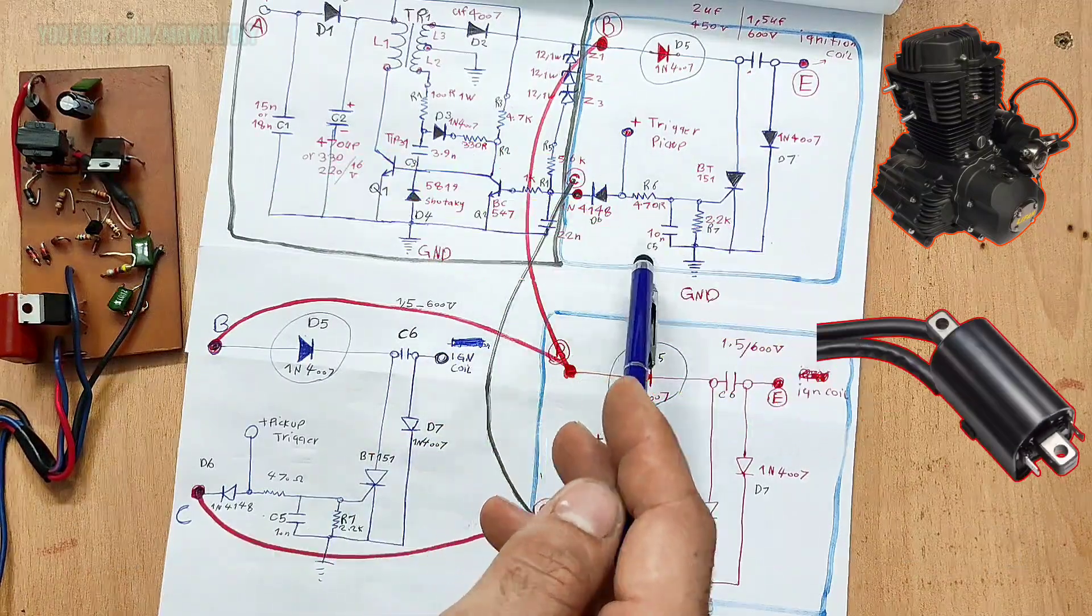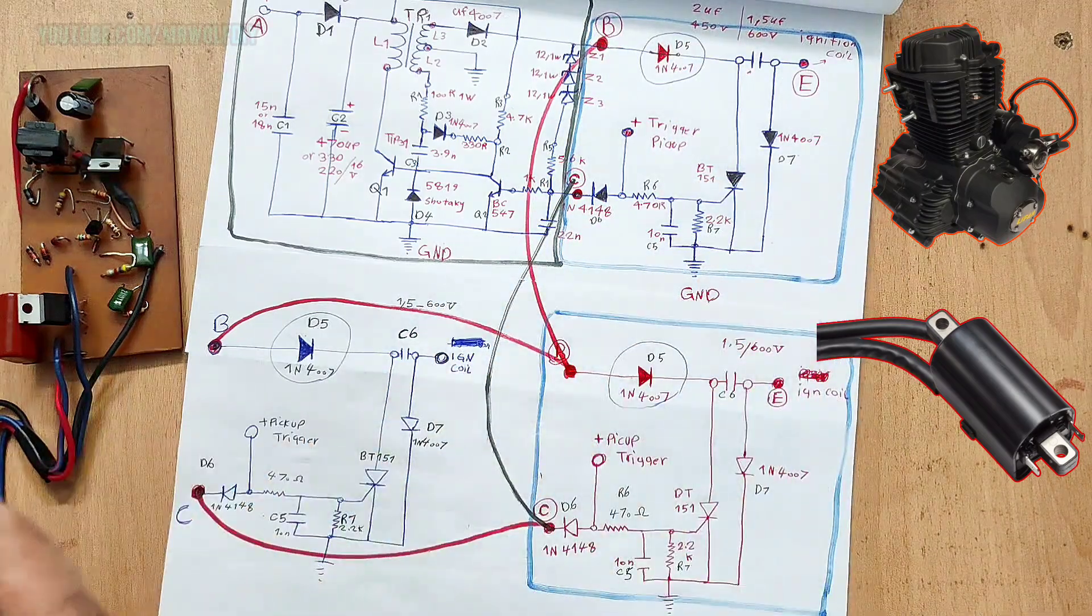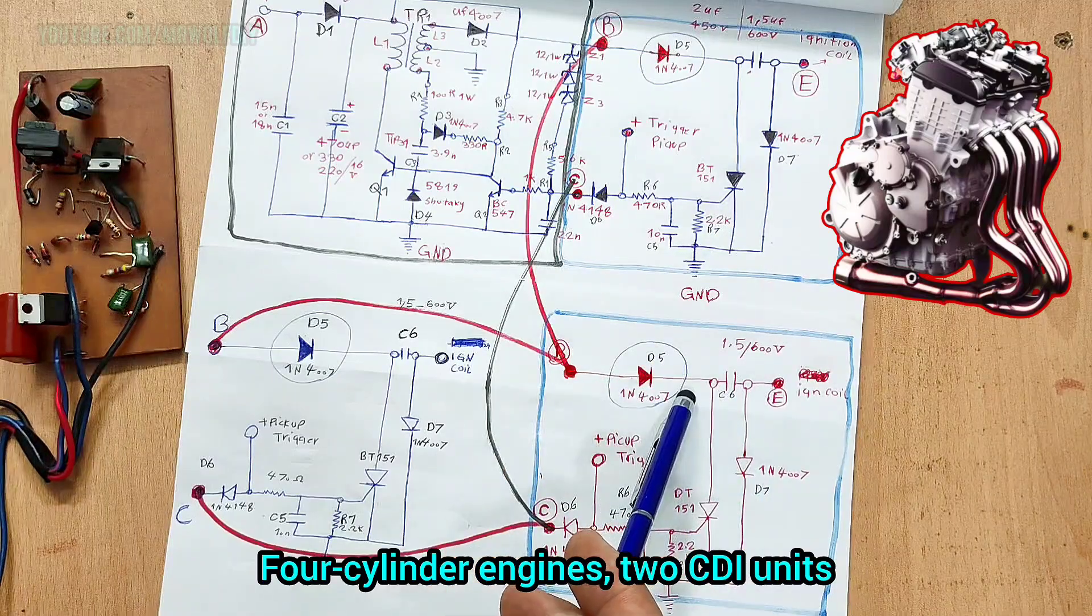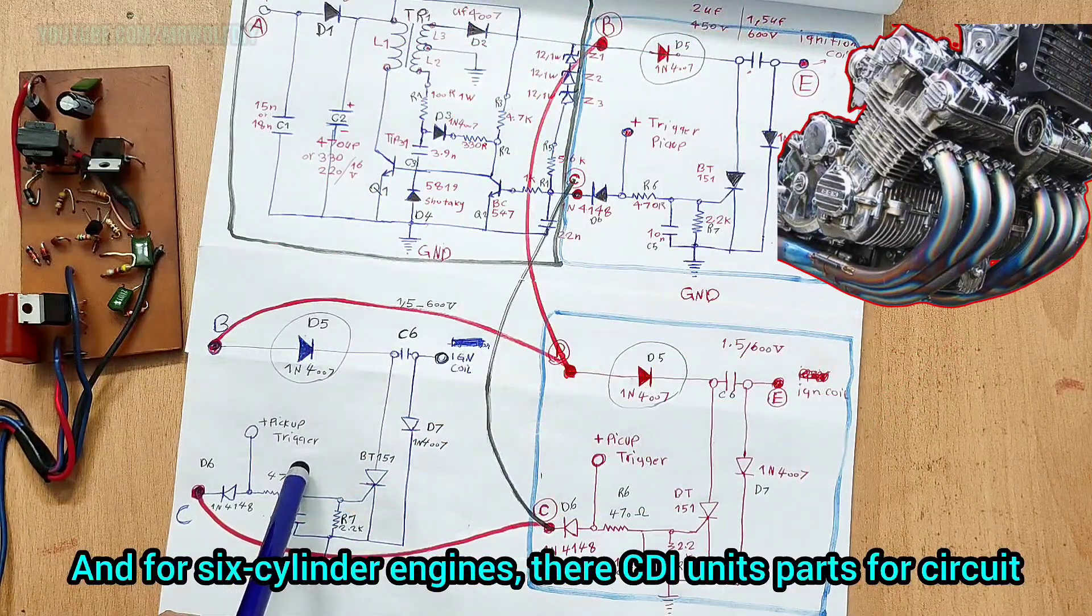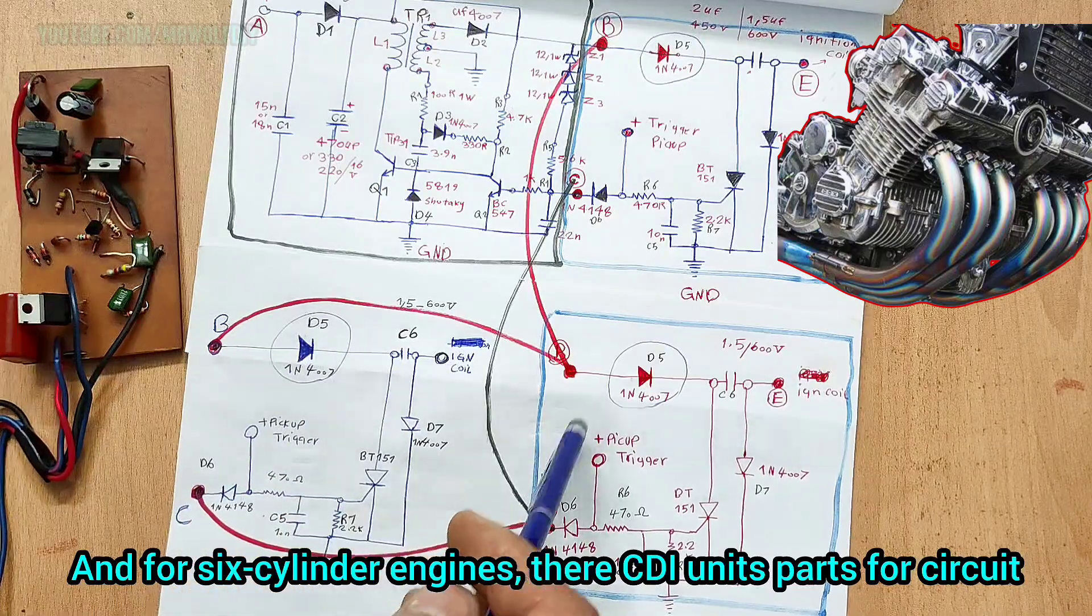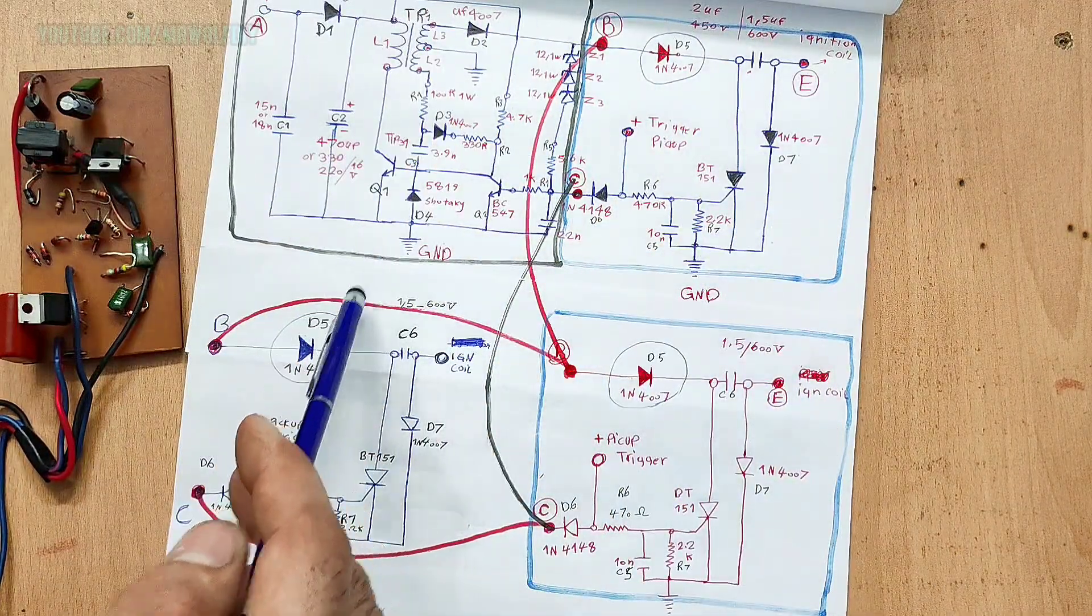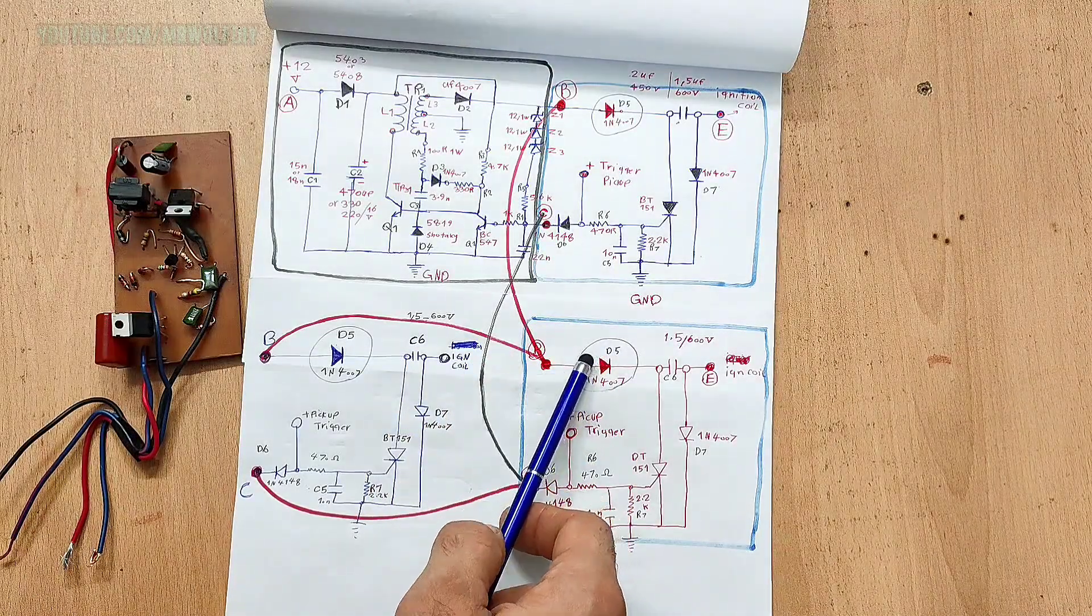So for one cylinder engine and motorcycle with dual post coil ignition, you can use one CDI unit. For four cylinder engine, use two CDI units, and for six cylinder engine you need three CDI units.